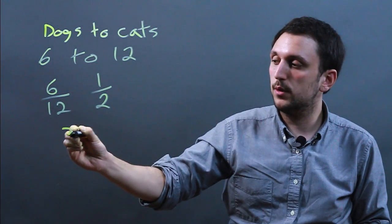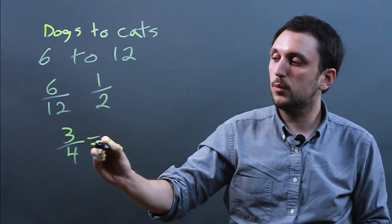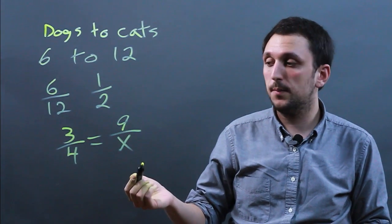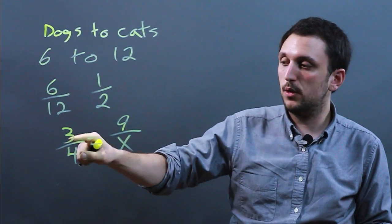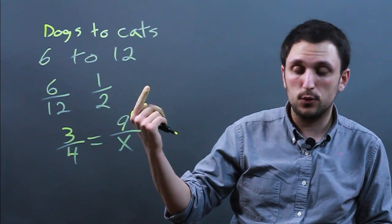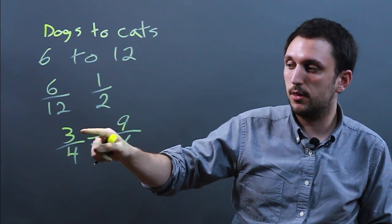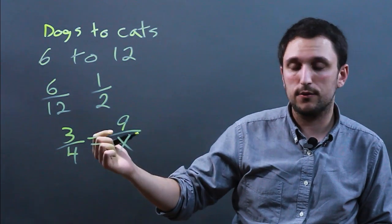Now if you have a proportion, let's say you have 3 over 4 equals 9 over x. You can't simplify this but you do know that 3 is to 4 as 9 is to 12 because 9 and 12 are both divisible by 3. 9 divided by 3 is 3, 12 divided by 3 is 4.